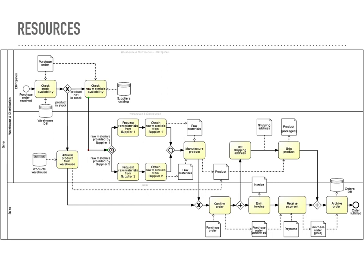By using pools and lanes in BPMN, one can visually represent the different participants and roles within the process. Pools provide a high-level view of the overall process, while lanes help break down the process into manageable sections and show the flow of activities within each participant's responsibility. This visual representation enhances clarity, facilitates process understanding, and supports effective collaboration among stakeholders involved in process modeling and improvement efforts.